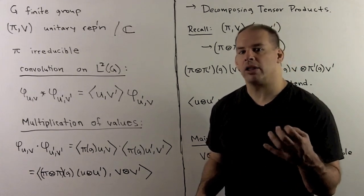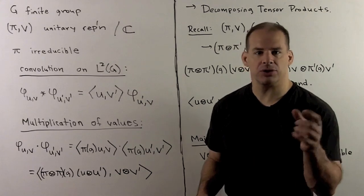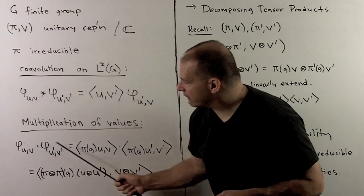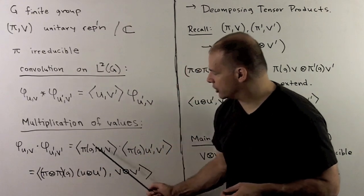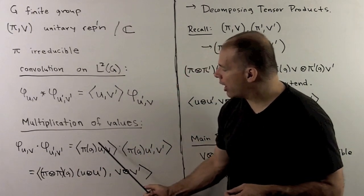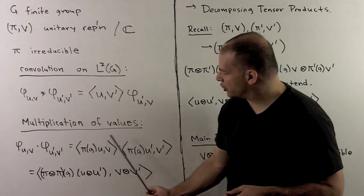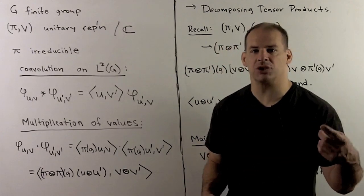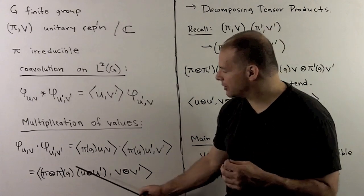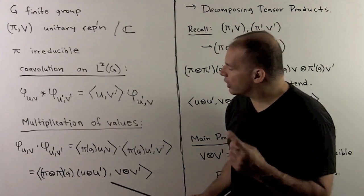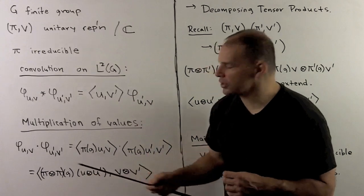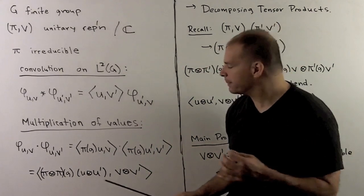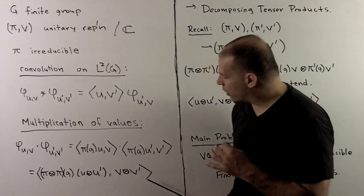If we look at regular multiplication of functions, we just multiply the values together. If I write the definitions for the matrix coefficients, and recall if I have a tensor product, the way I would take the inner product of two vectors in our tensor product is to match things up. So if I want to multiply two functions by their values, what we're doing is introducing a tensor product if we want to work with representations.